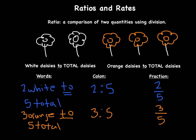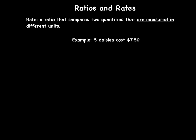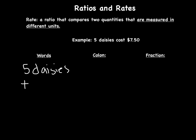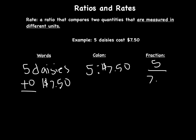Now that we've done the different types of ratios, let's look at rates. A rate is a ratio that compares two quantities measured in different units. A second ago, I was measuring daisies to daisies — the same units. But here, I have five daisies that cost $7.50, so I'm comparing daisies to money — different units — making this a rate. In words: 'five daisies to $7.50.' As a colon: 5 : $7.50. As a fraction: five over $7.50.